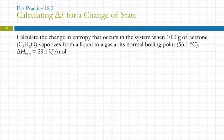Let's calculate delta S. Calculate the change in entropy that occurs in the system when 10 grams of acetone vaporizes from a liquid to a gas at its normal boiling point. We're given that boiling point and the heat of vaporization. Let's use the equation we just learned, that delta S is Q reversible divided by temperature.